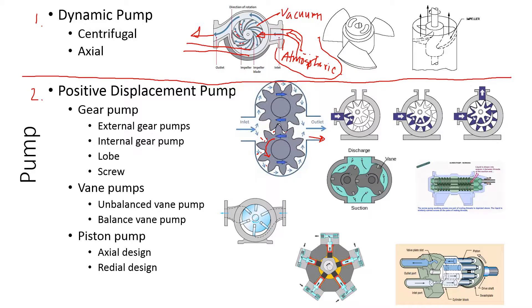These two gears meet externally, which is why this is called an external gear pump. An internal gear pump has one gear sitting inside another — a small gear inside a big gear. The gear pump and lobe pump are almost exactly the same, except for the shape of the gear. In a lobe pump, the gear looks more like a lobe, but they work exactly the same. The lobe pump can also be internal or external.